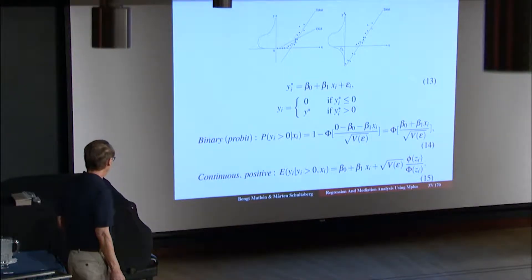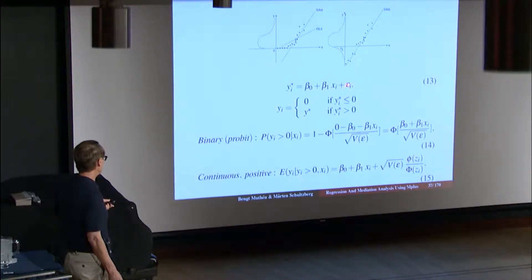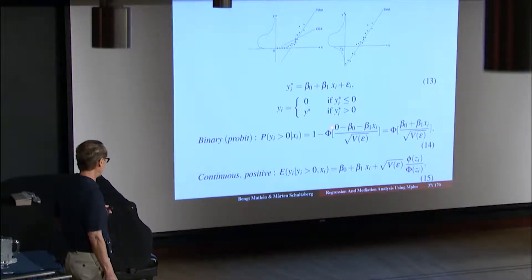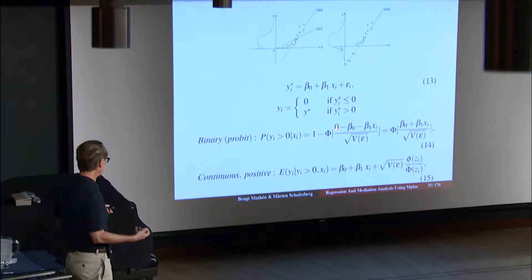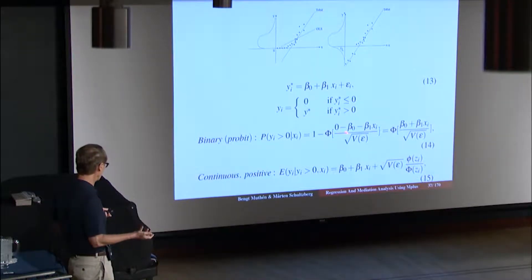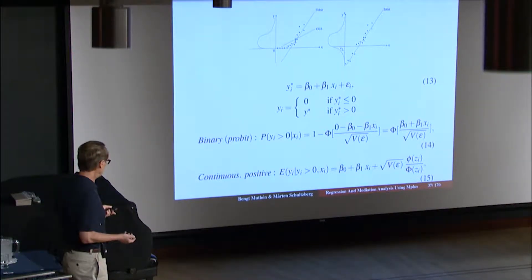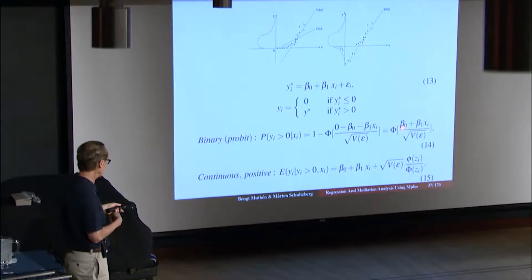The Tobit model has two parts. You have a binary part for modeling the probability of y greater than zero or not. With the normality assumption, that's one minus the probability of being below that point — this is standard stat 101. Phi is the normal distribution function. If you want the probability of being below, it's the value itself — zero — minus the mean, which is this part, divided by the standard deviation. All of this is given x. So value minus the mean divided by standard deviation: that is the normal distribution function argument. That's the probability of being below zero, and one minus that is the probability of being above. Due to the symmetry of the phi function, we just change the sign of this to get rid of the one minus, giving us plus beta zero plus beta one divided by the standard deviation.